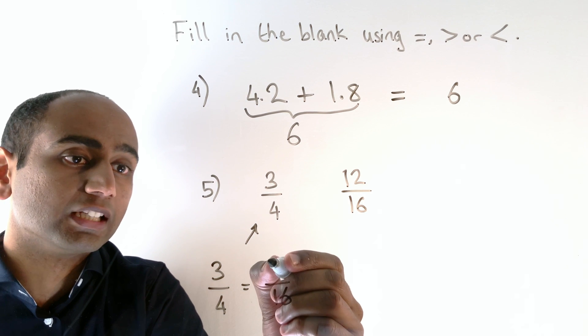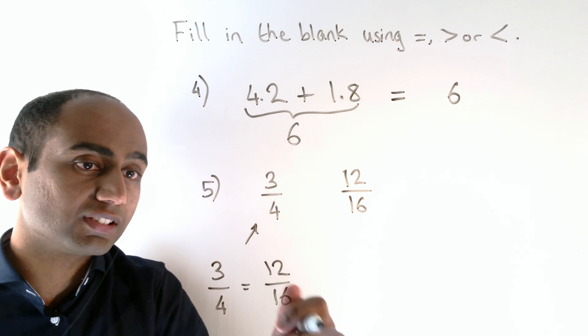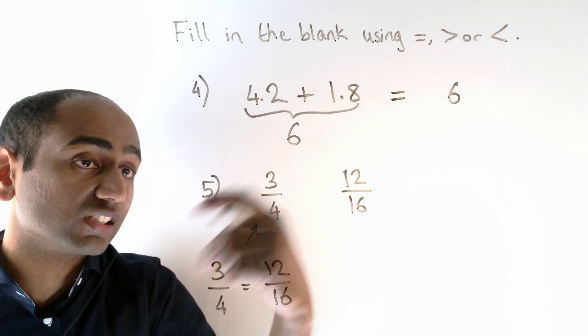And three times four is twelve. So three quarters is the same as 12 sixteenths, which means these are equal.